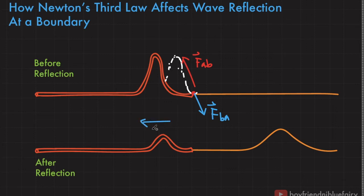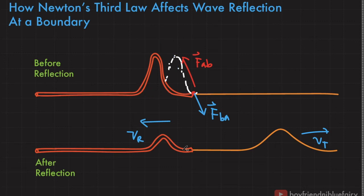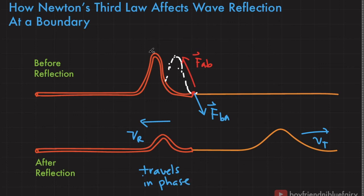After reflection, the reflected wave travels with velocity V sub R, and it's not out of phase because the heavier string retains its behavior due to its greater inertia. The transmitted wave along the lighter string has velocity V sub T, and it somewhat copies the behavior of the incident wave but with less energy, because some energy goes into the reflected wave. The energy of the incident wave is divided between the transmitted wave and the reflected wave. When the medium of the incident wave has a greater scalar property relative to the second medium, the reflected wave travels in phase with respect to the incident wave.